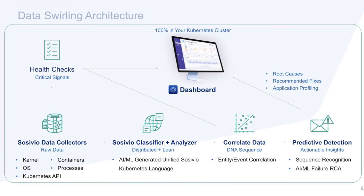Sasevio does this by heavily leveraging lean artificial intelligence and machine learning to not only automate the troubleshooting process, but also to predict failures before they appear and provide recommended fixes for issues. We are the first and only observability tool to be predictive, which is accomplished through a novel methodology called data swirling. We coined the term data swirling to describe the ability to analyze data on the fly from multiple layers of the stack, which is the backbone of our predictive capabilities.